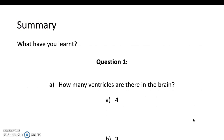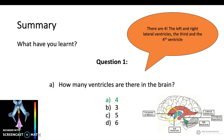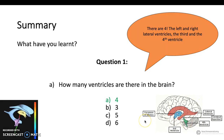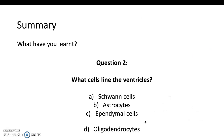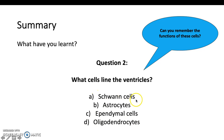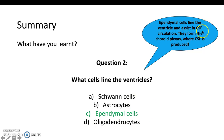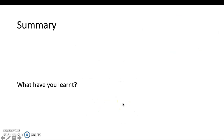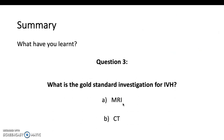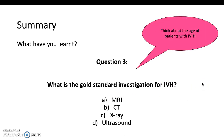To recap the opening questions: there are four ventricles — two lateral ventricles, plus the third and fourth. The ependymal cells surround the ventricles. Schwann cells and oligodendrocytes form the myelin sheath — peripherally and centrally, respectively. Astrocytes are supportive and associated with cerebral synapses. The gold standard investigation for intraventricular haemorrhage is an ultrasound.